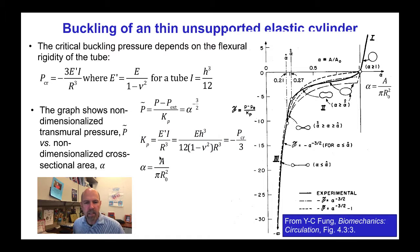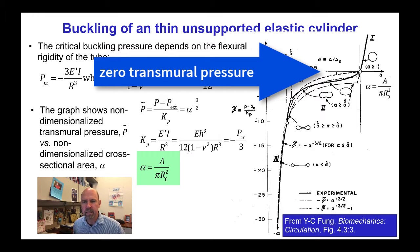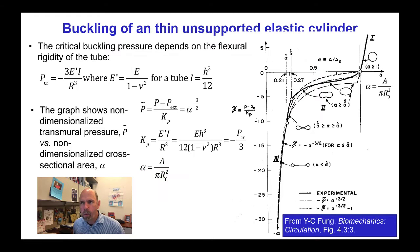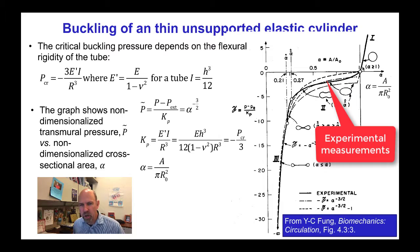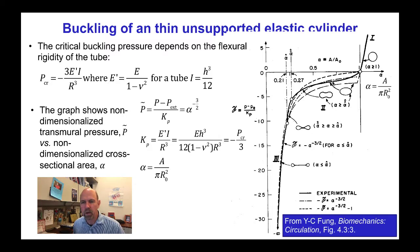And α, the normalized area variable, is the cross-sectional area of the vessel divided by πR₀², where R₀ is the radius of the vessel at zero transmural pressure. These experimental data shown in the solid line show that as the pressure inside the vessel falls below the pressure outside the vessel, the cross-sectional area falls dramatically as the vein starts to buckle.